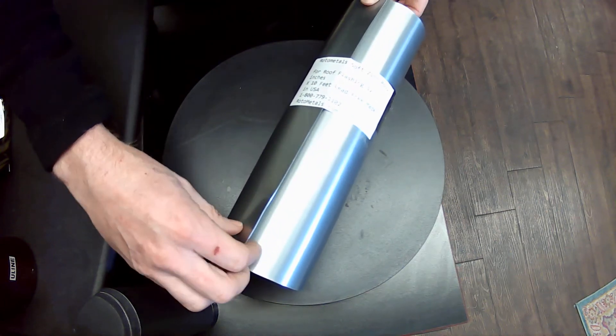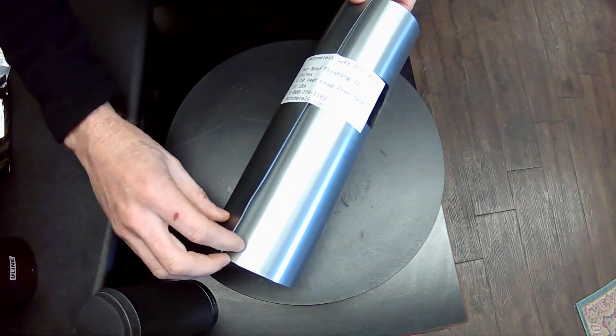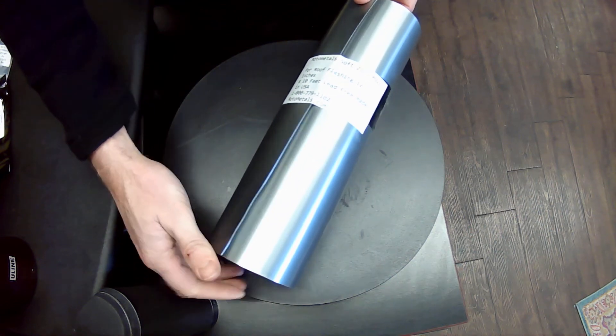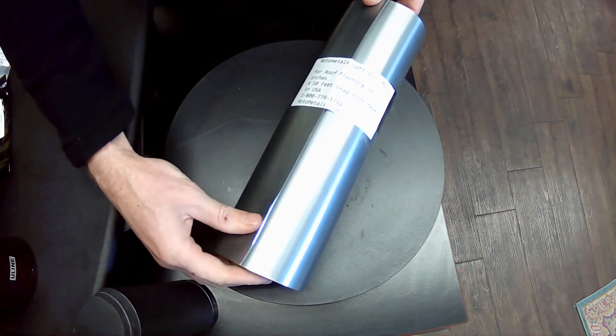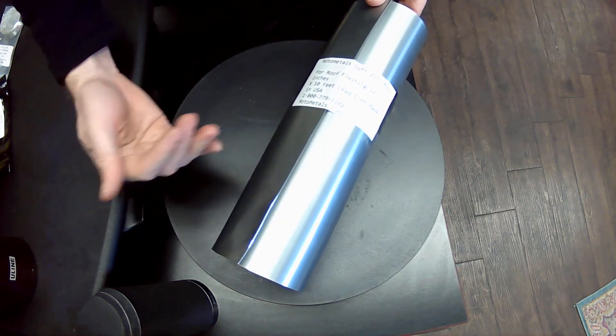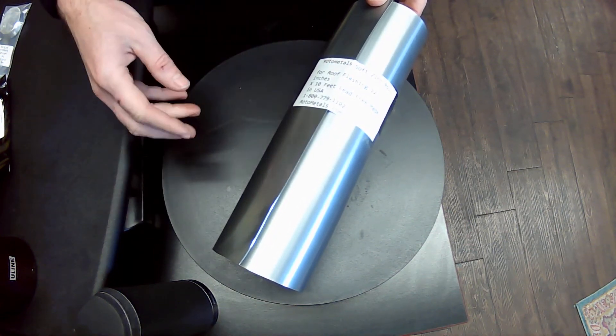This is the Soft Zinc. It doesn't have any titanium added to it, which is what makes it softer. You can roll it out and use it as flashing around the roof.